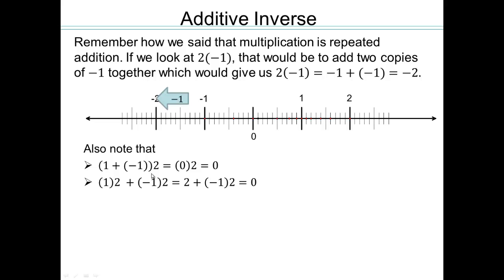1 plus negative 1, times 2, is the same as 0 times 2, because 1 and negative 1 are additive inverses of each other, so we have 0 times 2 is 0. Using the distributive property of multiplication over addition, we have 1 times 2 plus negative 1 times 2, which gives us 2 plus negative 1 times 2 equaling 0. Whatever the value of negative 1 times 2 is, that is going to be an additive inverse of 2, because they're adding up to 0.